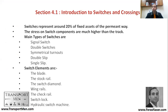Switches represent around 20% of fixed assets of the permanent way — this can be in value or actual physical assets. The figure is between 10% to 20%, but the key point is it's a very important asset in the infrastructure. Switches and crossings are very valuable assets, subjected to higher stresses than the track itself because they run on a curve and have sharp edges, so wear on switches can be much higher than wear on the track.